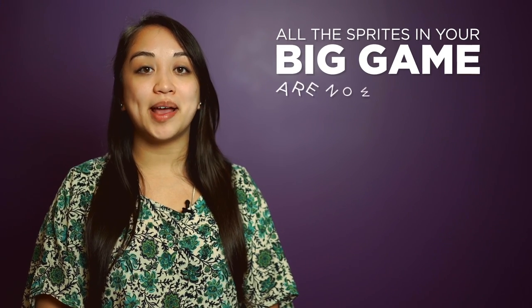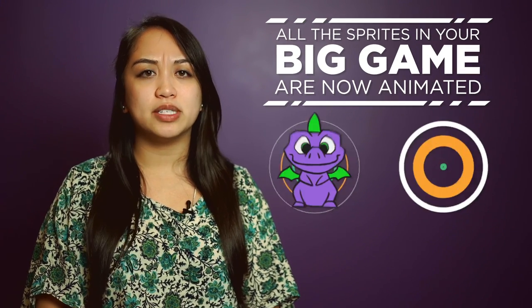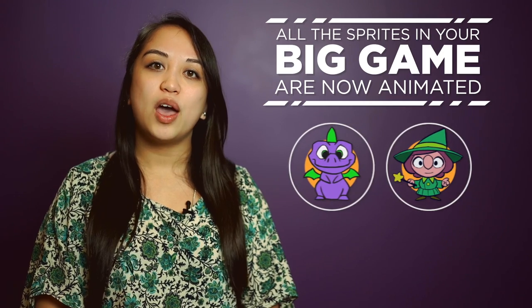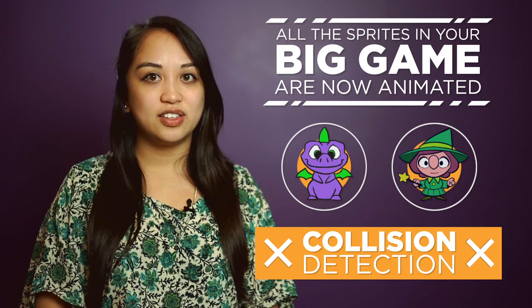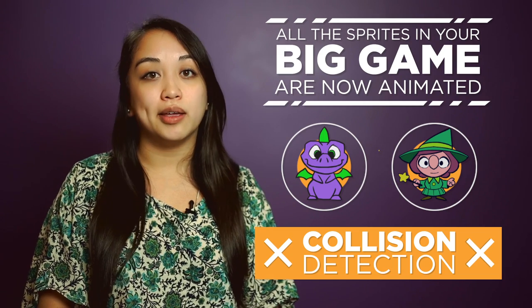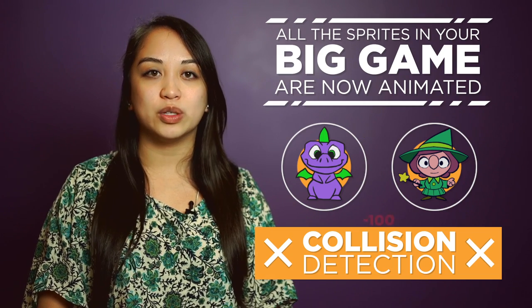All the sprites in your big game are now animated, but nothing happens when they run into each other. We're going to use collision detection to find out when sprites have touched each other, so that we can later apply rules like increasing or decreasing your score when sprites collide.